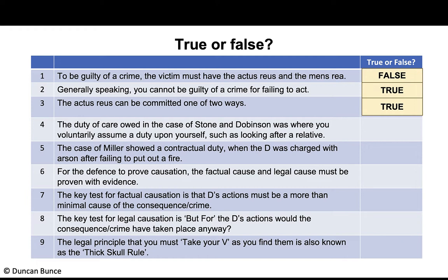The duty of care owed in Stone and Dobinson was where you voluntarily assume a duty upon yourself, such as looking after a relative — that is true. Stone voluntarily said he would look after his elderly, mentally ill sister, didn't help her, and she died. The case of Miller showed a contractual duty when the defendant was charged with arson after failing to put out a fire.